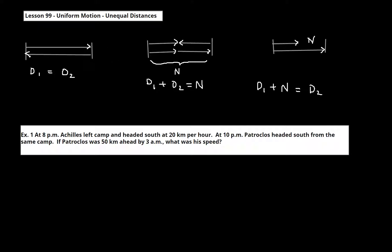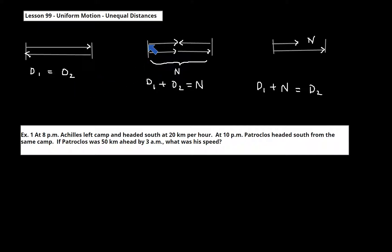I'm going to quickly review the different types of uniform motion problems we've done so far this year. The first type is where distance 1 equals distance 2 — either someone goes somewhere and comes back, or two people leave from the same place and end up in the same place. The second type is where things crash: something comes from one direction and something comes from the other, and they meet in between, so distance 1 plus distance 2 equals a given total distance.